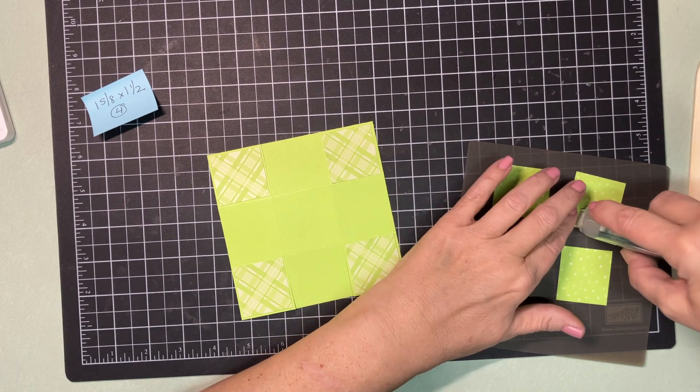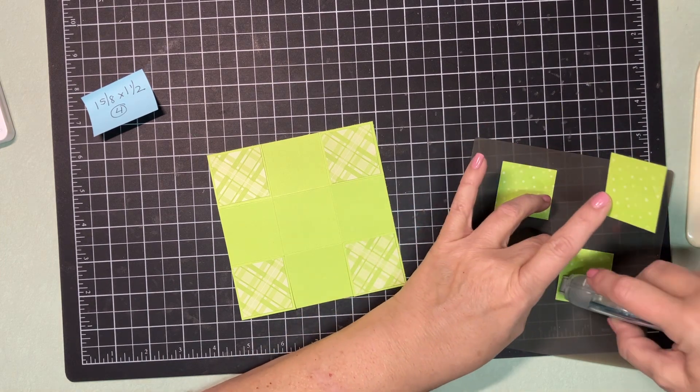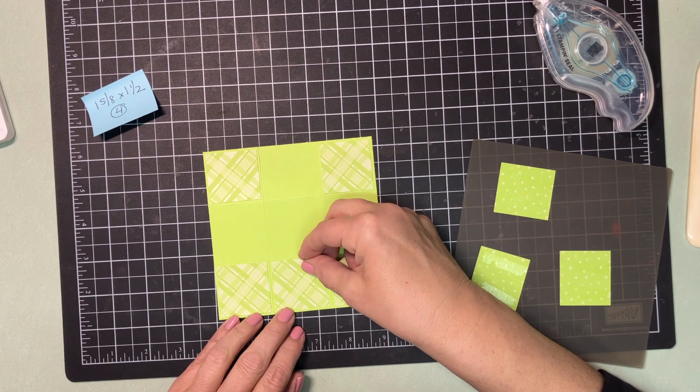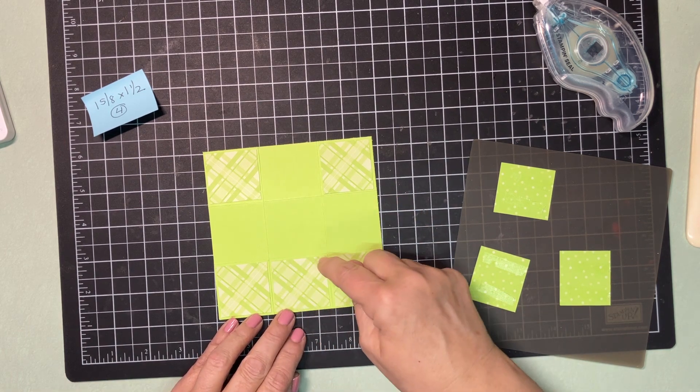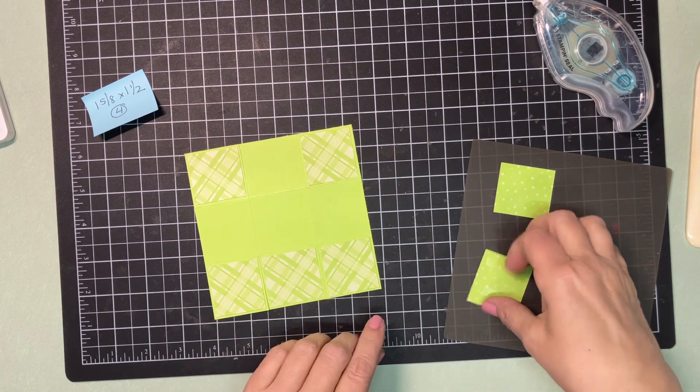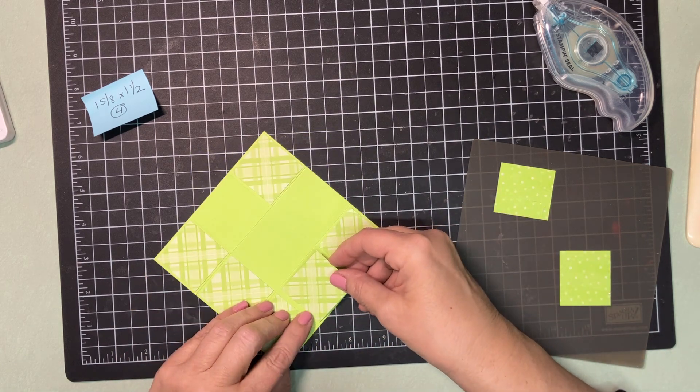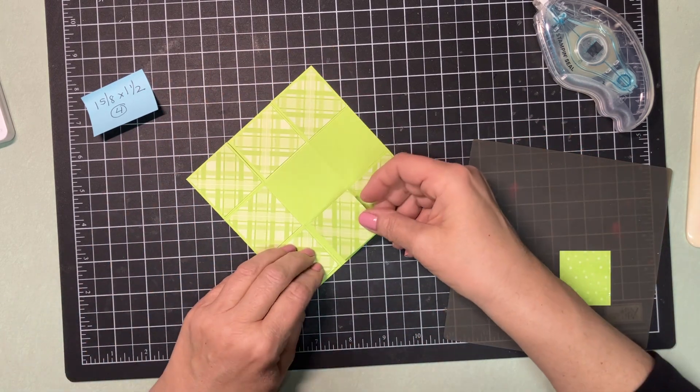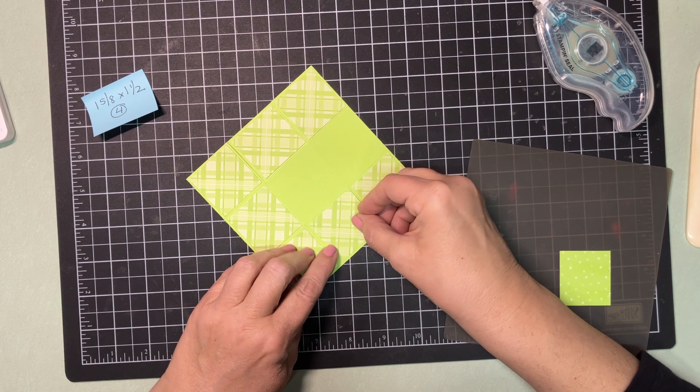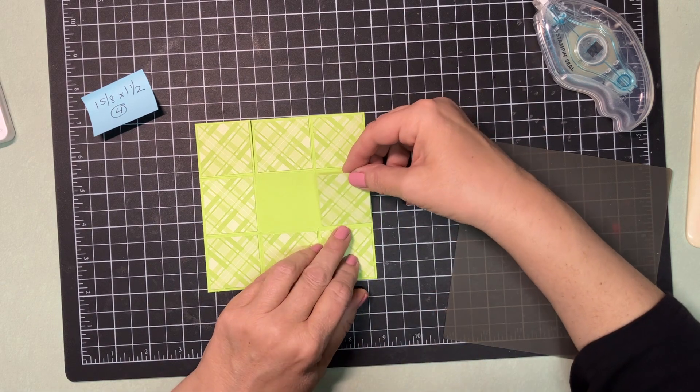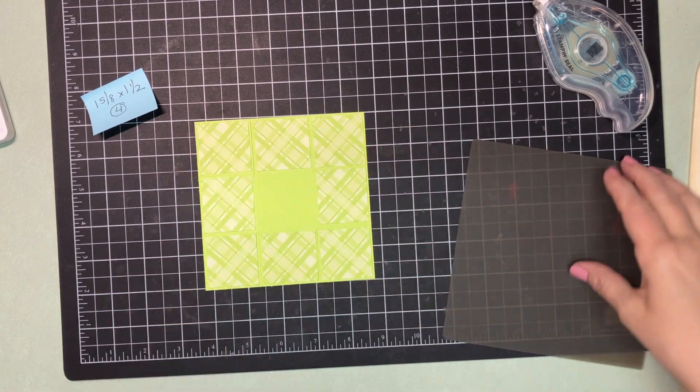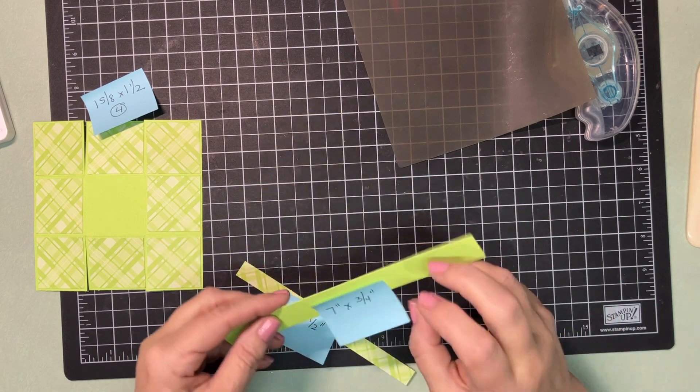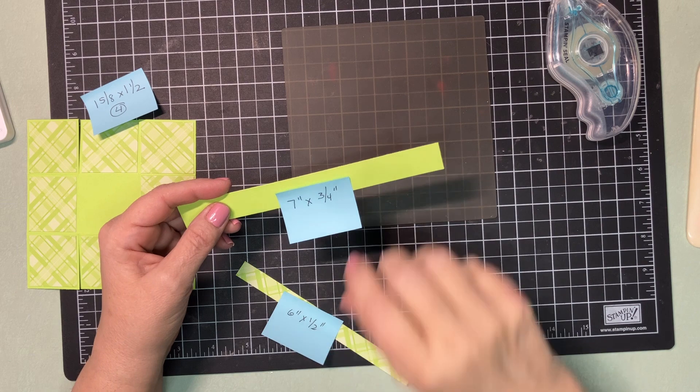Now, these are just slightly different. They're one and five eighths by one and a half. And those are going on these four pieces. Now, you could make this out of just DSP and not decorated like I am. But I wanted a sturdy box this year. Now, when you put these on, the half inch pieces here, this is one and five eighths. The width is what's longer. So, look carefully before you commit to where the paper is going. Just like that.